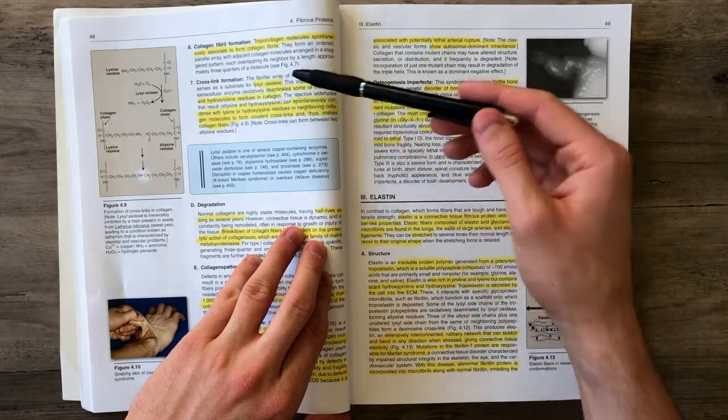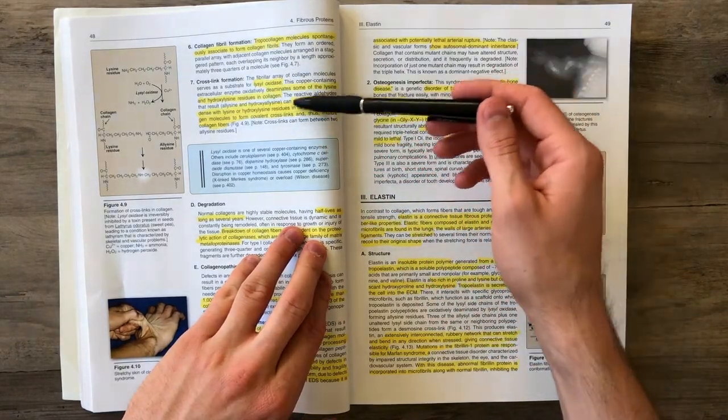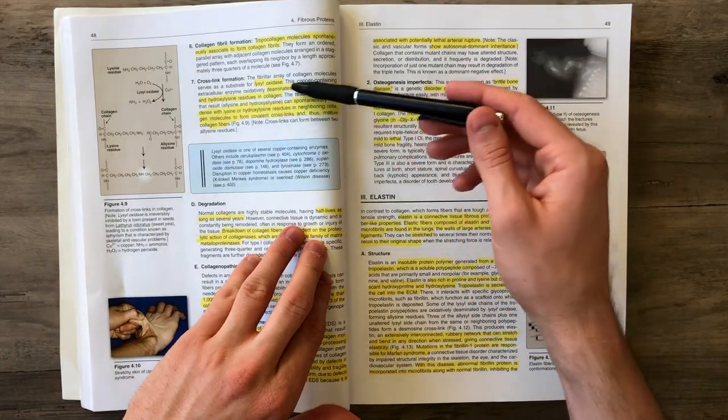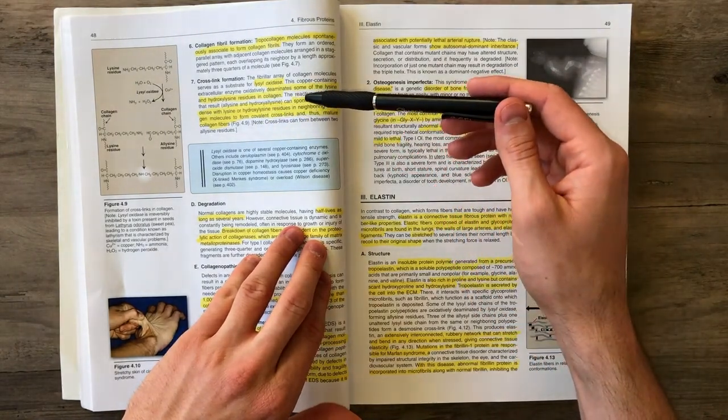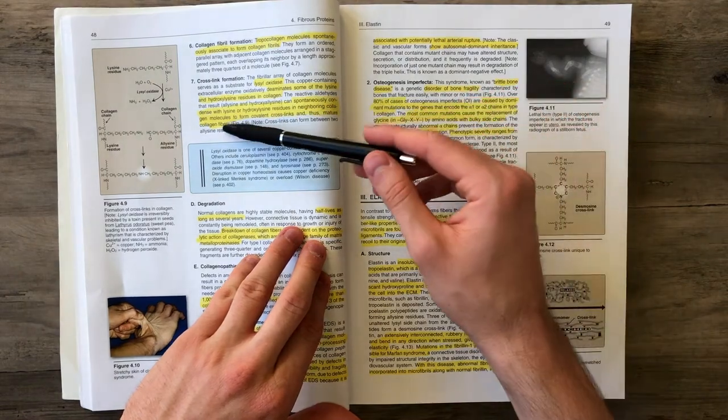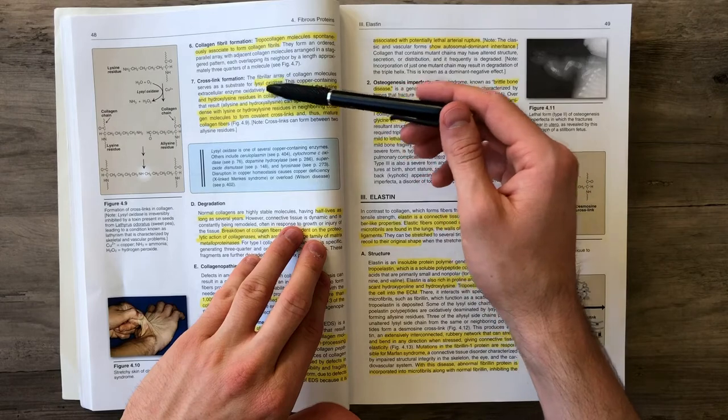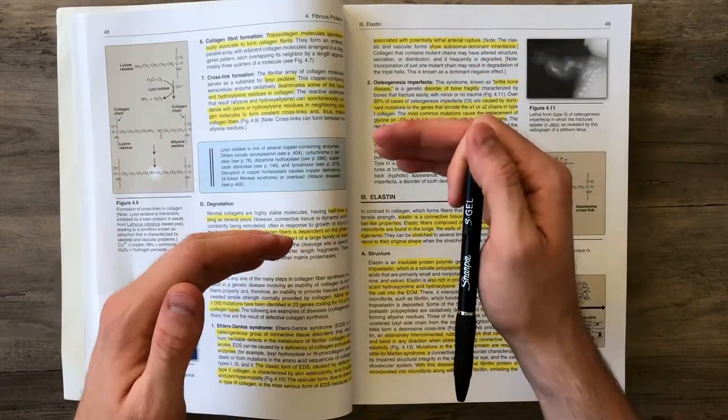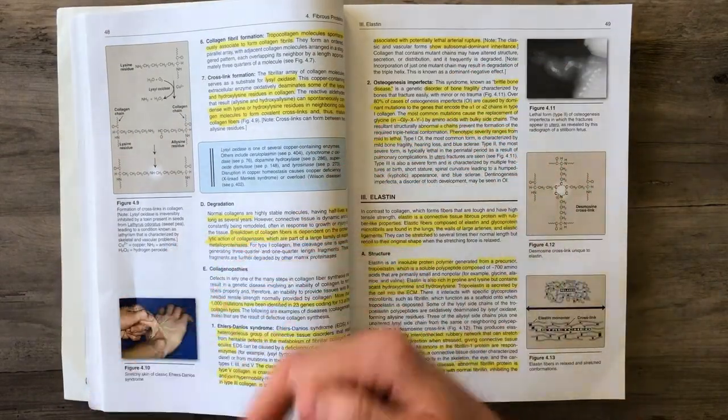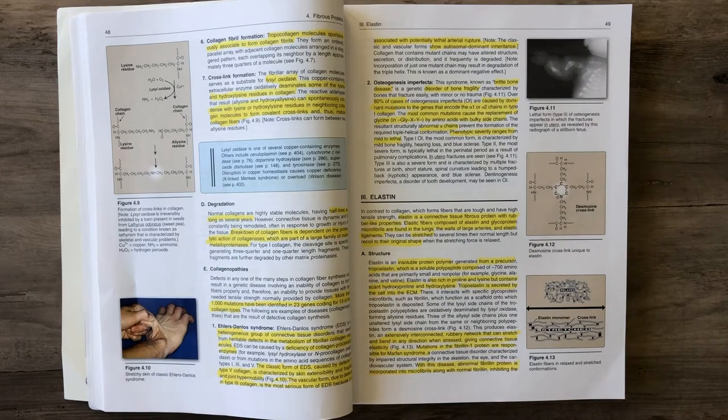The last step is lysyl oxidase that deaminates some of the lysine and hydroxylysine within the collagen, allowing these residues to connect to neighboring collagen molecules and form covalent crosslinks. The formation of mature collagen fibers includes this deamination to allow covalent bonds or crosslinks, creating a strong structure.